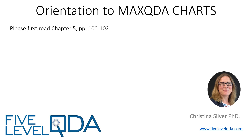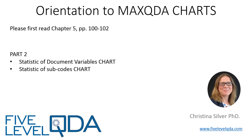This is Part 2 of the Orientation to Charts, dealing with the Statistic of Document Variables chart and the Statistic of Subcodes chart. Remember that other videos in this series show other MaxQDA visualizations, including the interactive word tree, the tag cloud, matrix browsers and maps.